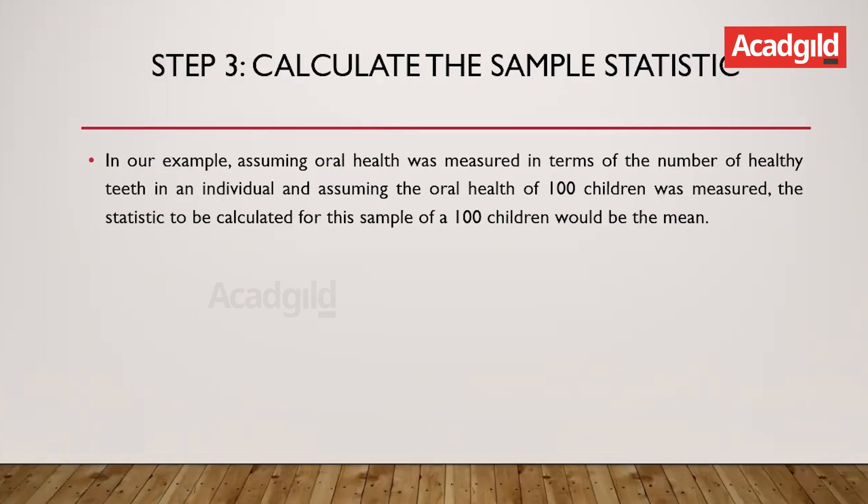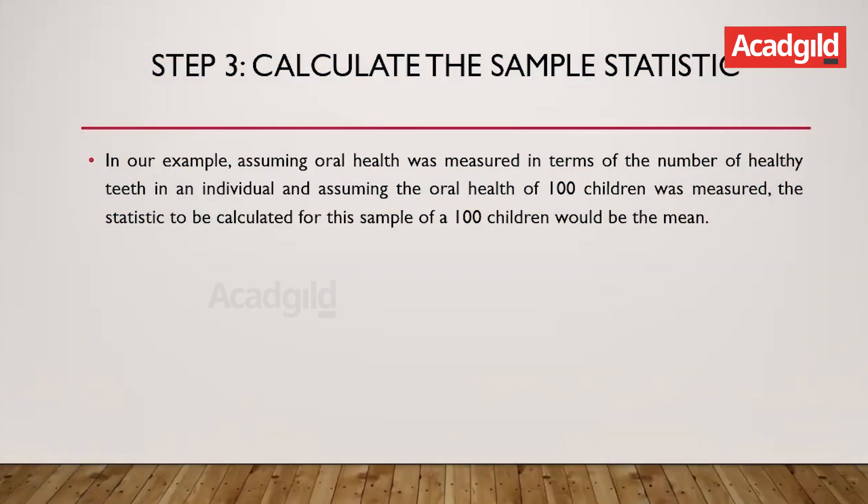The next step, step three, is to calculate the sample statistic. We want to make inferences about a general population, but since we cannot make measurements individually for all members of a population, we make inferences from a sample. In order to make conclusions about the population, we need to calculate statistics on the sample — in our example, for the children whose oral health we are trying to monitor.